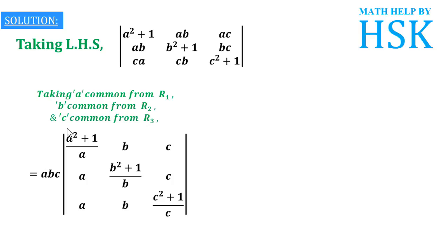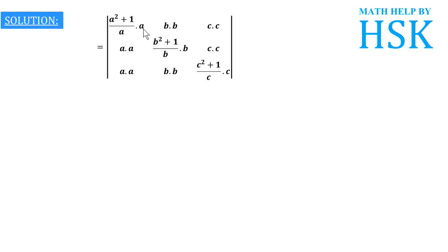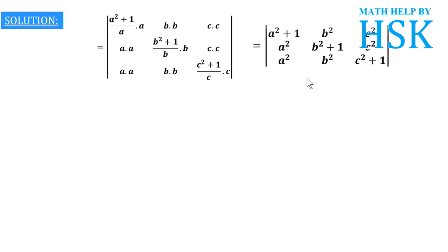Next, I am going to multiply a to column 1, b to column 2, and c to column 3. On simplifying this determinant, the a's cancel out, giving us a², b², c² in the appropriate positions, and we get entries a²+1, b², c²; a², b²+1, c²; a², b², c²+1 in the resulting determinant.